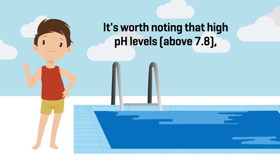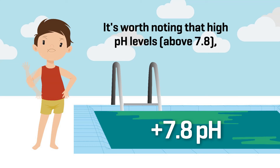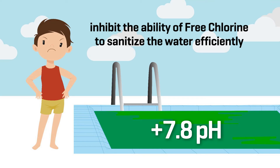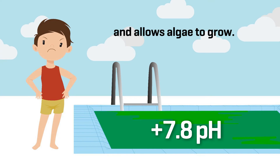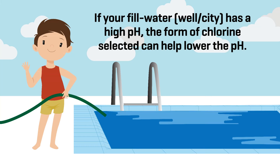It's worth noting that high pH levels above 7.8 inhibit the ability of free chlorine to sanitize the water efficiently and allow algae to grow. If your fill water — well or city — has a high pH, the form of chlorine selected can help lower the pH.